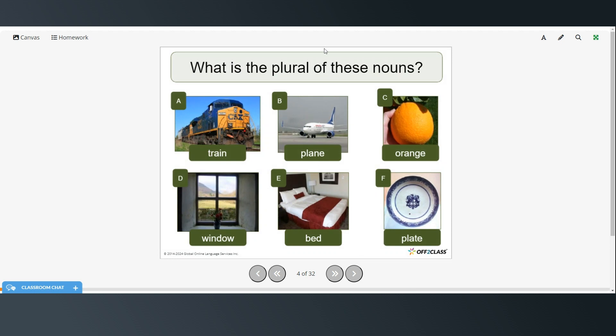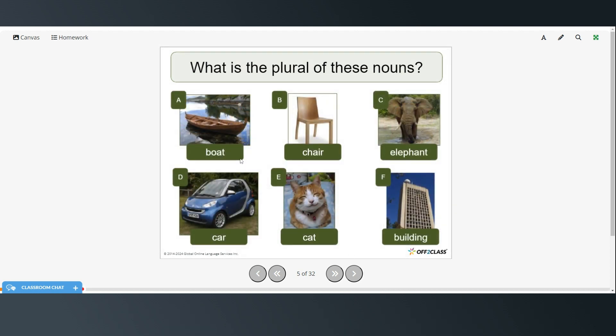So what's the plural of these nouns? So train would become trains. Plain, plains. Orange, oranges. Window, windows. Bed, beds. Plate, plates. Boat, boats. Chair, chairs. Elephant, elephants. Car, cars. Cat, cats. Building, buildings.